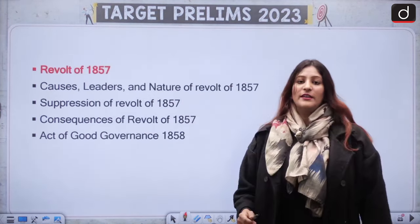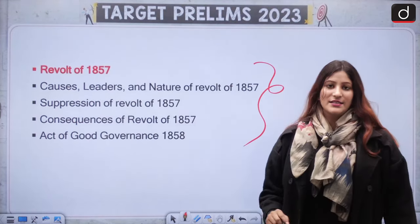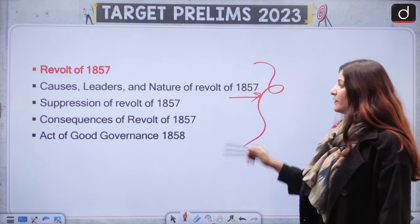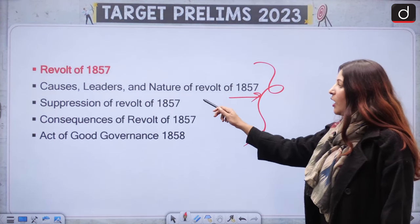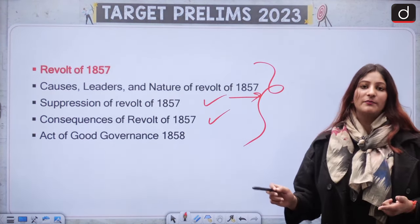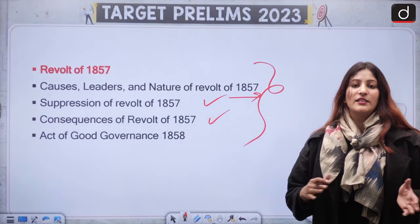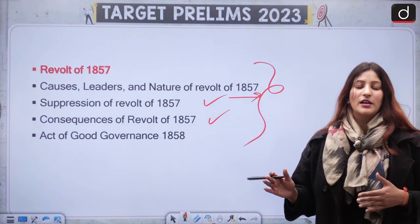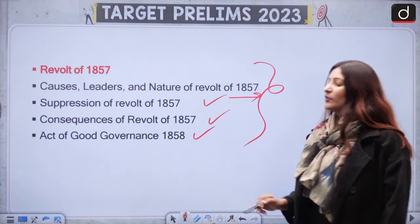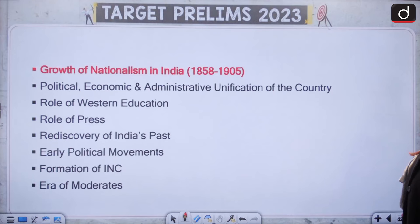Then the Revolt of 1857 — very important for both prelims and mains — causes, leaders, nature of the revolt, how it was suppressed, and its consequences. Acts were passed, and the administration went under the Crown — it had earlier been under the East India Company. The Government of India Act was an important outcome.